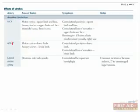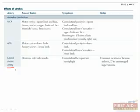The ACA is medial, so you will have effects on the motor and sensory cortices that supply the lower limb. Last on the anterior circulation is the lateral striate artery. It is a common location for lacunar infarcts, which are infarcts that occur secondary to long-term hypertension. Because this vessel supplies the striatum and internal capsule, you can have a severe hemiparesis and hemiplegia.